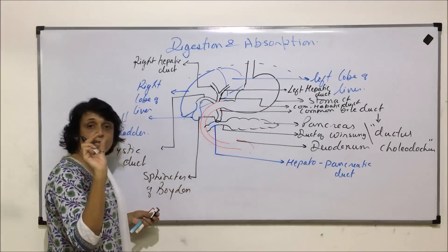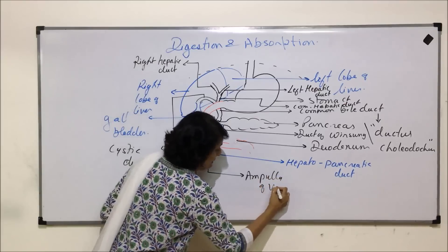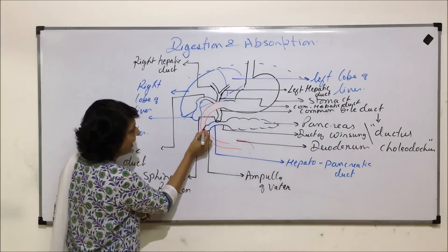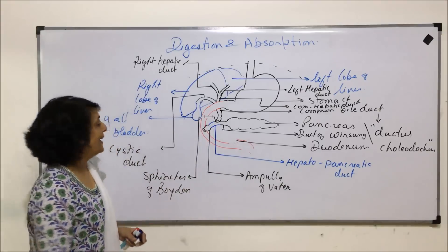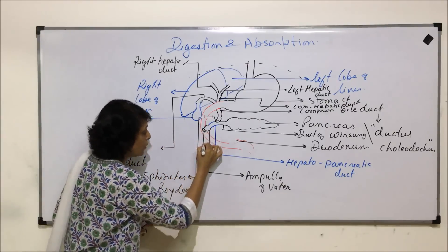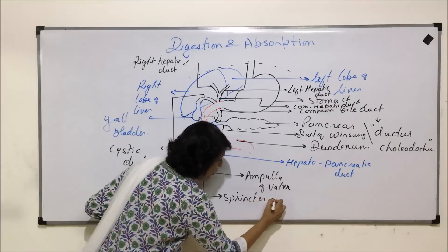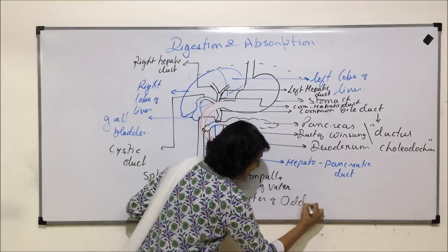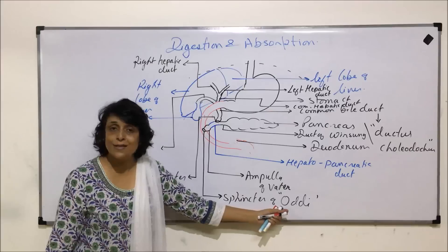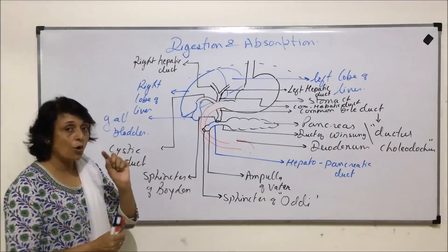The hepato-pancreatic duct opens into the duodenum, but before it opens it swells into a bulb-like structure. This bulb is known as the ampulla of Vater. The opening of the hepato-pancreatic duct into the duodenum is also guarded by a sphincter, and that is known as the sphincter of Oddi — named after the scientist who discovered it.